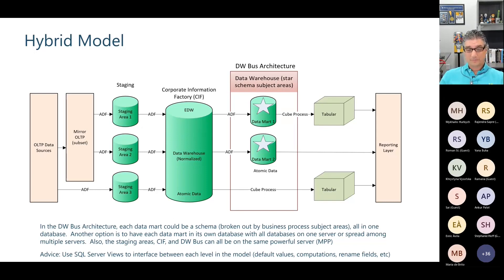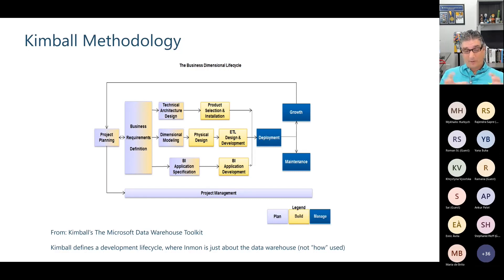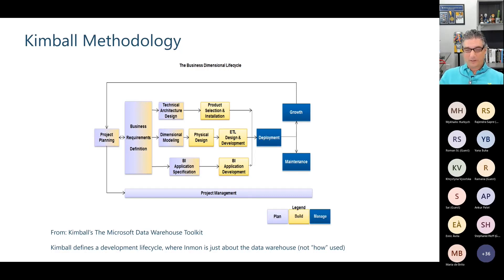The Kimball methodology is more than just what I've covered. His books go into how to get business requirements, how to plan, how to design dimensional or star schemas, how to test and debug, and how to set up your teams. There's a great book called The Data Warehouse Toolkit that I still consider the Bible — it's dated on the technology being used, but the concepts still apply. His other technology-agnostic books go into very deep detail on dimensional modeling and project management, still highly relevant even with agile methodologies and Scrum.